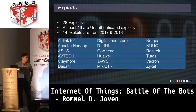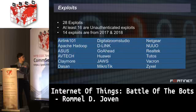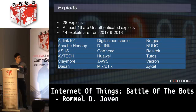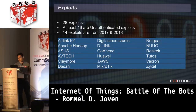We detected 28 exploits being used by Mirai variants. At least 16 are unauthenticated — meaning no credentials are needed to exploit the IoT device. Fourteen of the exploits are from 2017 and 2018, so users who don't patch their devices remain vulnerable even if they changed their passwords. The affected brands span routers, modems, CCTV cameras, DVRs, IP cameras, web apps, and minor software products.